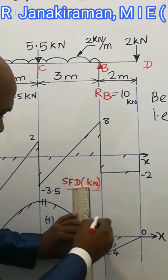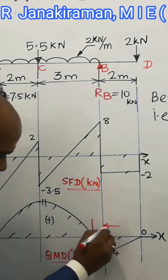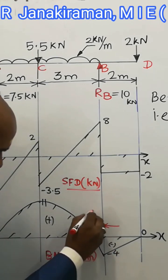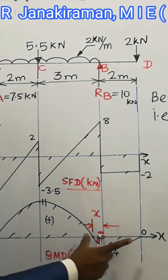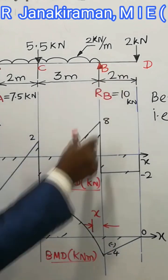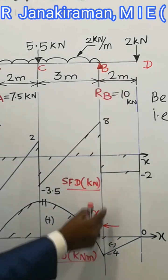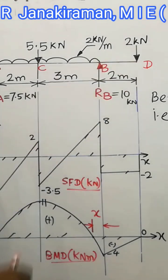in the beam, that is the point of contraflexure. Suppose this distance is assumed as x. From point D, the distance x, so 2 plus x, will be the distance from point D.